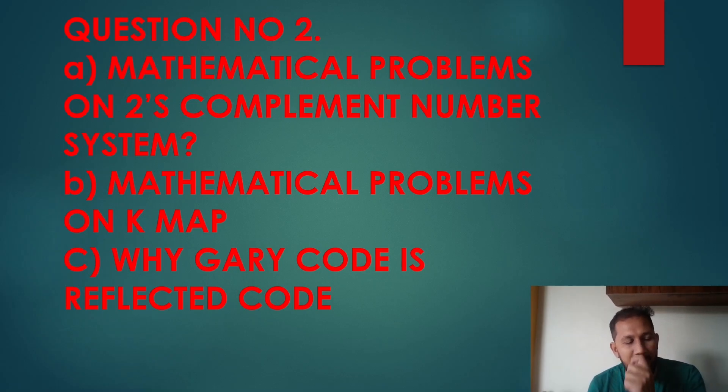Mathematical problems on K-map. If you have a mathematical problem on K-map, you have a question on K-map. Basically, you don't get it, but you have a max and min term. Then, you have a definite code on the BCD number. Why Gray code is reflected code? The explanation.